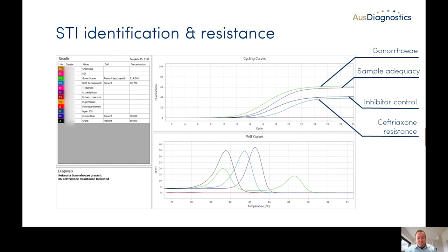The blue curve here is for ceftriaxone resistance. We also have two positives that are the internal controls. Once again, the black curve is inhibitor control, with the purple curve being our sample adequacy control. Like the SARS-CoV-2 typing example, there's a window in the bottom left that provides an interpretation of the results. In this case, it tells us that we have a patient that is positive for gonorrhea, and more importantly, it is also identified as ceftriaxone resistant. This is all vital information that when provided to a clinician can really help guide an appropriate treatment for this particular patient.